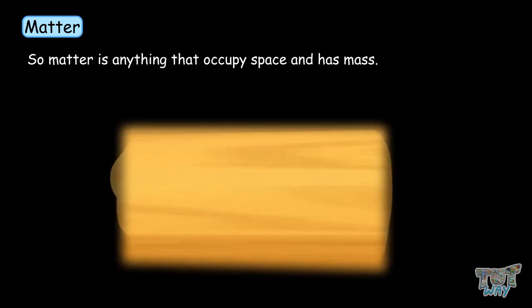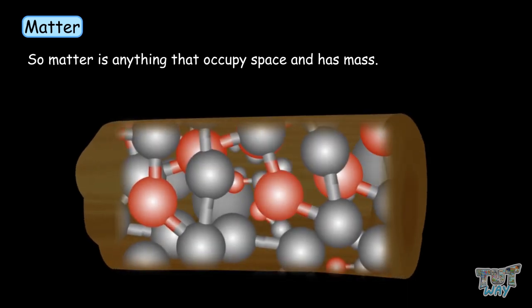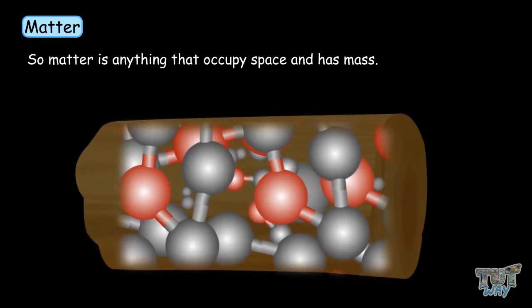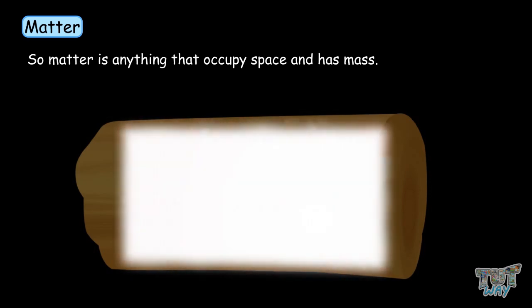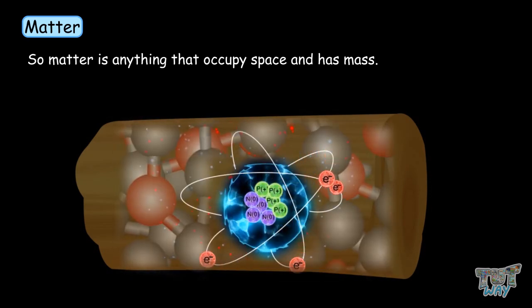Matter is made up of smaller units called molecules. Molecules are further made up of atoms, and atoms are further made up of protons, neutrons, and electrons.